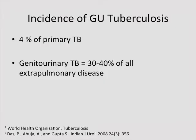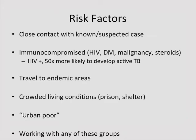Genitourinary tuberculosis accounts for about 4% of all primary TB and about 30% to 40% of all extrapulmonary tuberculosis. Risk factors for GU-TB include close contact with suspected or known cases of TB, immunocompromised individuals, travel to endemic areas, crowded living conditions such as prisons and homeless shelters, the urban poor, and anyone who works with any of these groups.